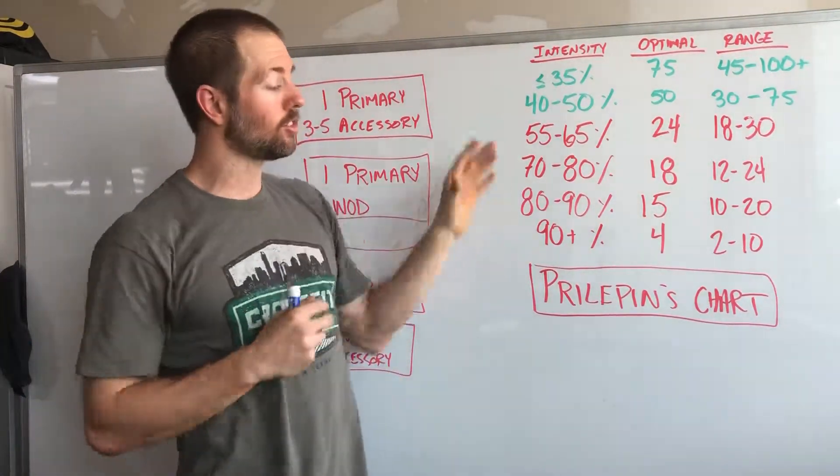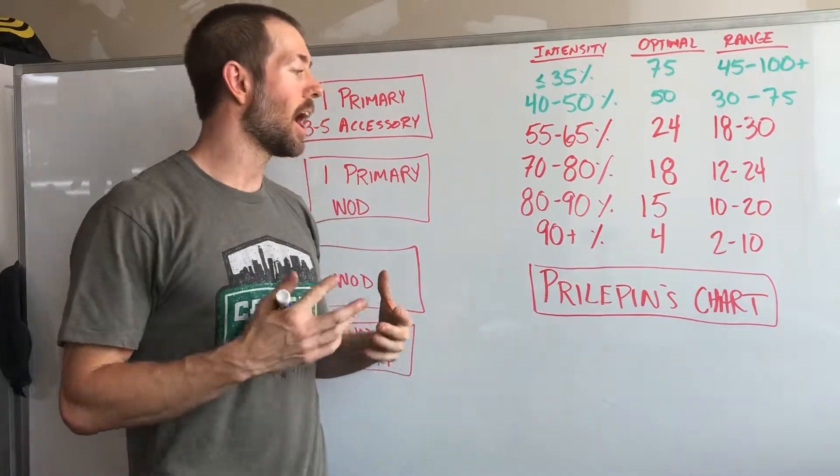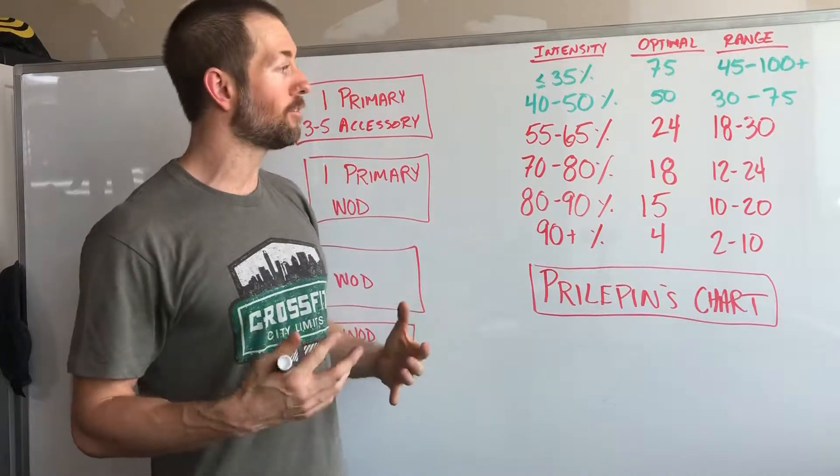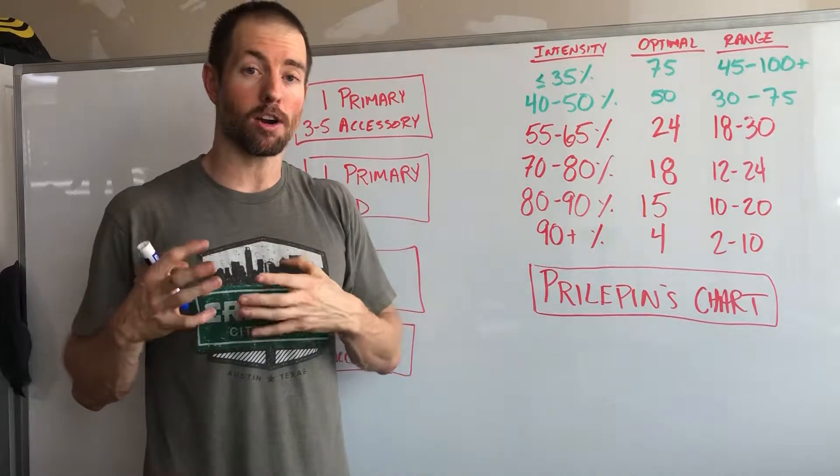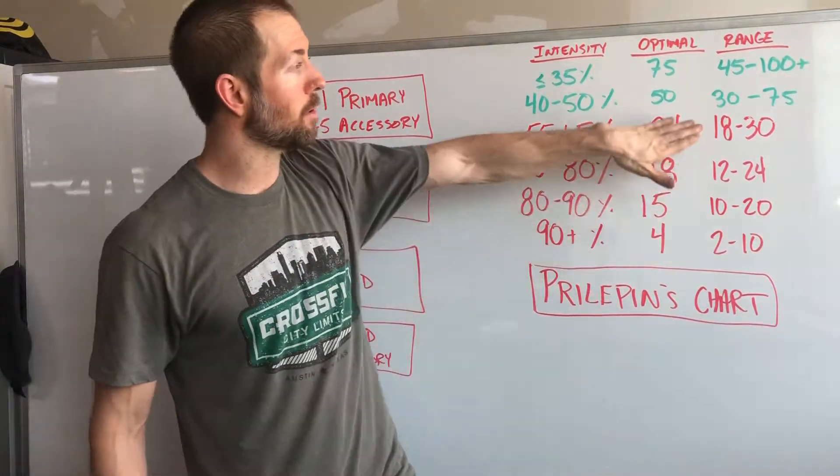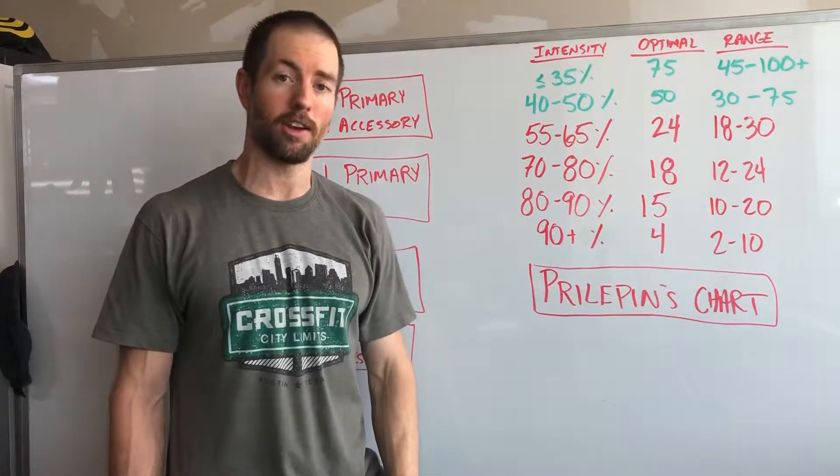So this chart is kind of used as the gold standard for programming and we want to base a lot of our decisions off of this. If we're trying to back off a little bit, maybe we're coming off of a hard day or maybe we just have a back off week, then we're going to be pushing towards the lower end of the ranges up here.